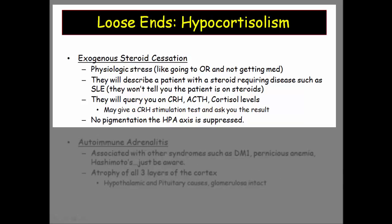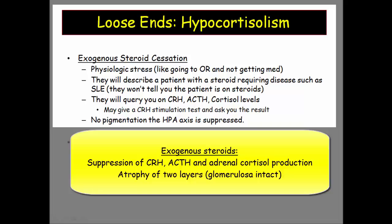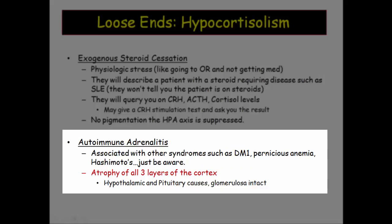Before getting to questions, some loose ends. They do like the case of exogenous steroid use. The classic question involves cessation of medication — what are the physiologic responses of CRH, ACTH, and cortisol? They are suppressed. What does the adrenal gland look like? Atrophy of the inner two layers; the glomerulosa is unaffected. In autoimmune adrenalitis, be aware of the association with other autoimmune diseases, and note that all three layers of the gland are impacted.